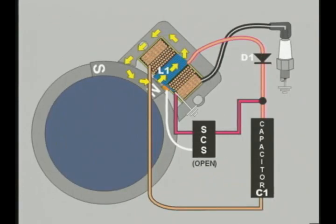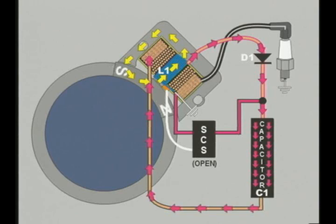Capacitive discharge, or CD systems, have a separate charge coil winding inside the ignition module, identified here as L1. As the flywheel magnet passes, the current induced in the charge coil is rectified by a diode, D1, and charges a capacitor, C1. The capacitor is connected in series with the primary coil winding.